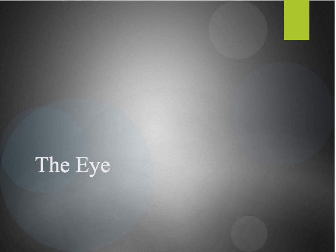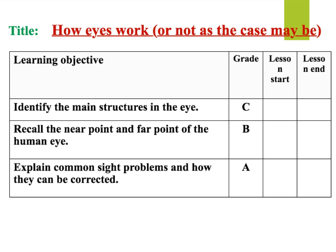This video will focus on the second topic in Edexcel P3 — the eye and sight problems. Within this tutorial, we will be looking at the main structures of the eye, making sure that we can identify and label them correctly, having a look at what we mean by the near point and far point of the human eye, and finally looking at some common sight problems, including long and short-sightedness, as well as how they can be corrected.